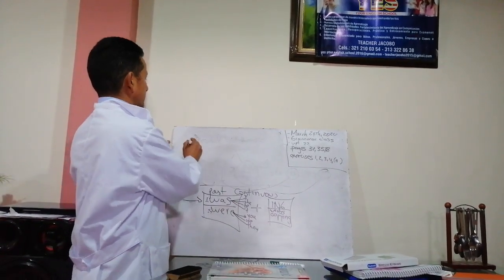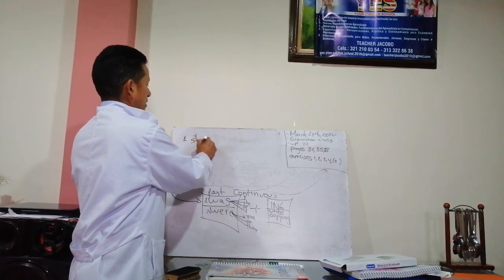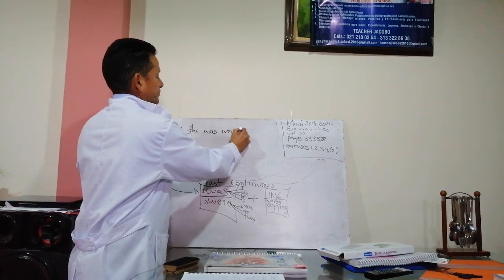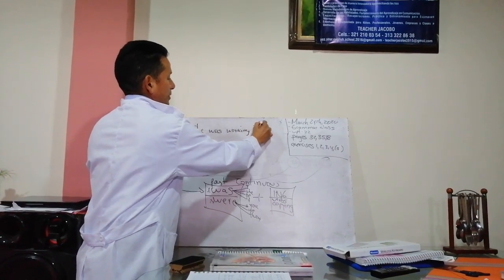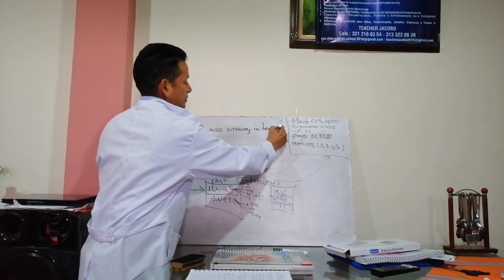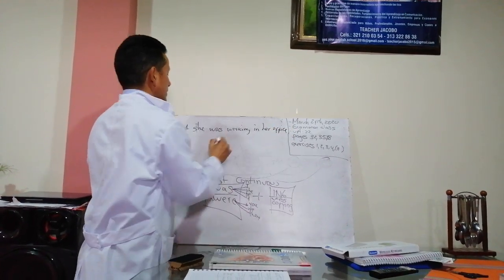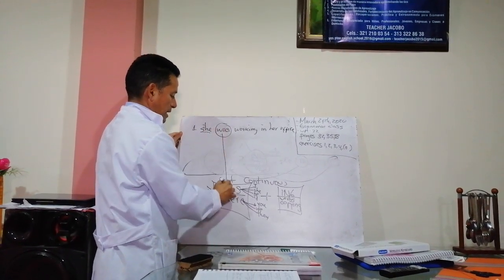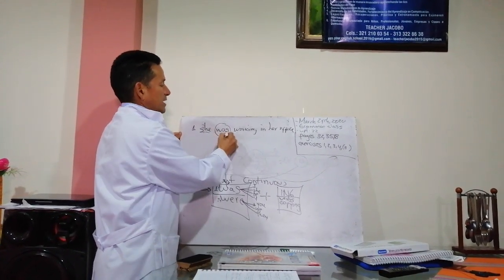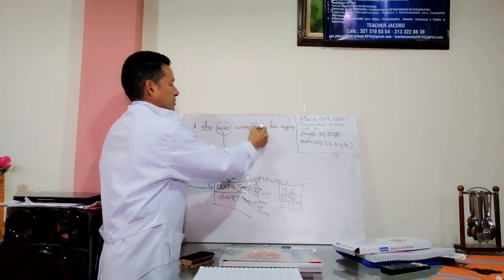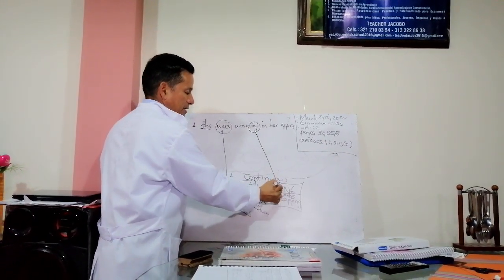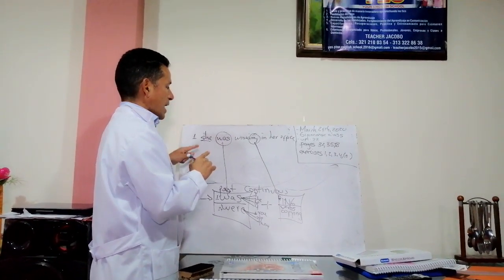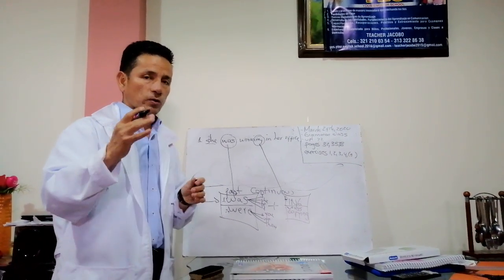Vamos a hacer un caso específico. Entonces, aquí básicamente estamos diciendo que ella, este es el verbo to be que estaría acá. Ella estaba, ella estaba. Y ese ING que es el siguiente concepto, trabajando en su oficina. Ahí es donde quiero que miremos. Entonces, vamos a ver otro ejemplo.